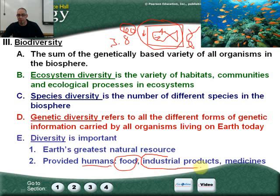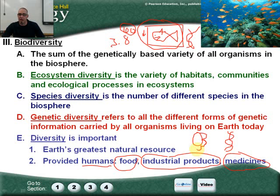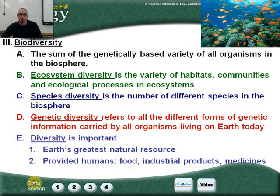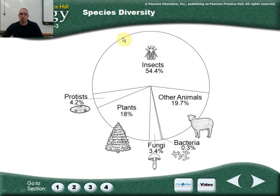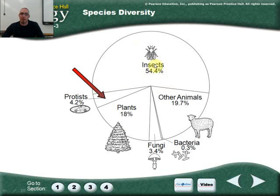Biodiversity is beneficial because it keeps us alive through more food sources, industrial products, and especially medical advances. If you're clearing the rainforest, you could be killing off a flower with the genetic sequence to cure Alzheimer's, Parkinson's, or even cancer. Insects actually have the most species diversity of any group — it's a hypothesis that after humans are gone, insects will be the dominant species.